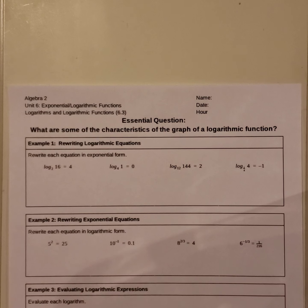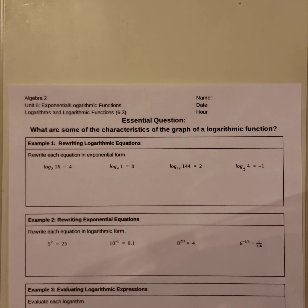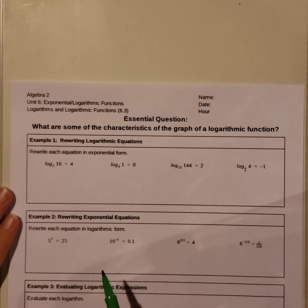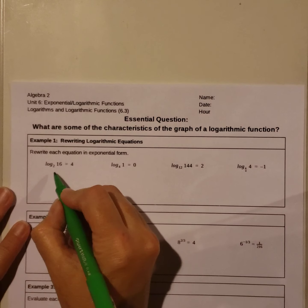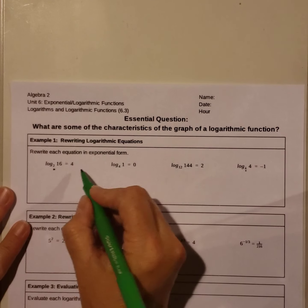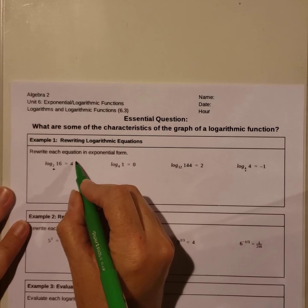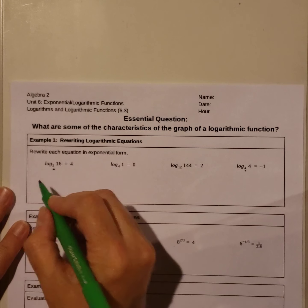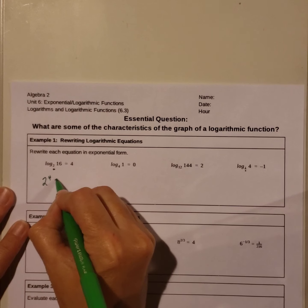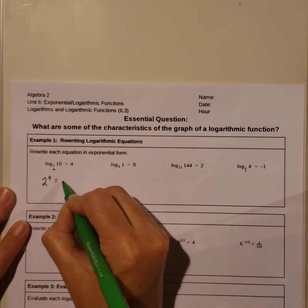Example 1: rewrite each equation in exponential form. We're going to use the rules that we just looked at — take the base, raise it to our exponent, to make it a true statement.